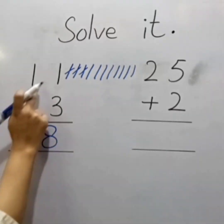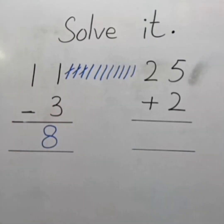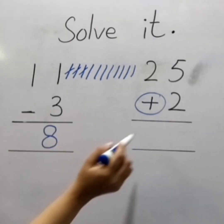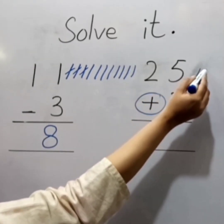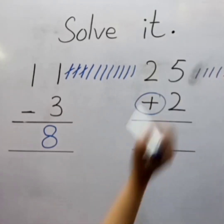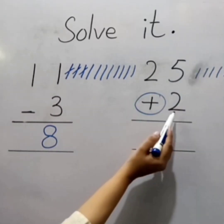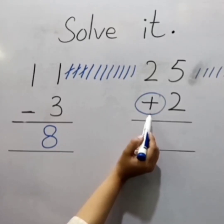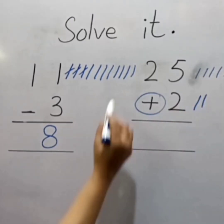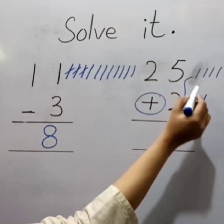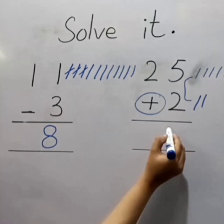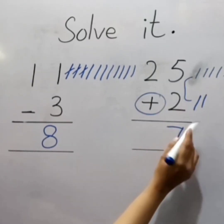Here is the sign of addition. First draw 5 lines: 1, 2, 3, 4, 5. The next number is 2, so we draw 2 more lines: 1, 2. Now add them: 1, 2, 3, 4, 5, 6, 7. The answer is 7. So 5 plus 2 equals 7.